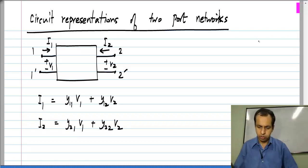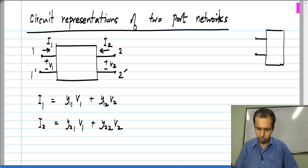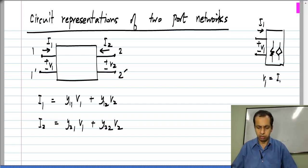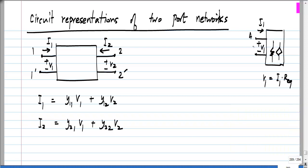This is analogous to being given a box with linear elements inside. You could provide the relationships algebraically as V1 equals I1 times R-equivalent, or equivalently, if this is terminal A and terminal B, you could say that between A and B you have this equivalent resistance — you could show the picture instead. What we are going to do is similar: instead of showing the equations, we will show the picture.